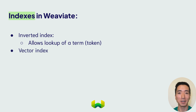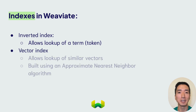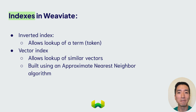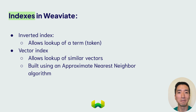The vector index, on the other hand, is all about enabling efficient retrieval of vectors based on similarity. Just like how the inverted index speeds up lookups for matching terms, the vector index speeds up vector similarity searches. Weaviate builds a vector index of your data in the background using an approximate nearest-neighbor algorithm, so that it can perform vector searches at lightning-fast speeds.